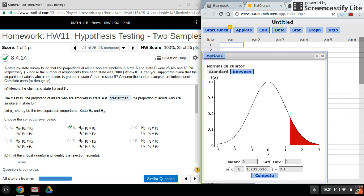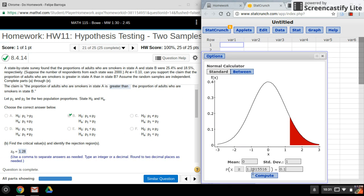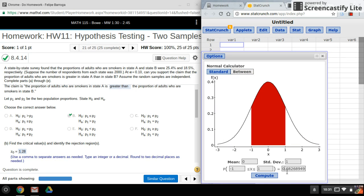And hit compute and there's my critical value. That's really all there is to it. So if it was a two tail test you just hit between and do a one minus alpha here, similarly for the T critical T values as well.